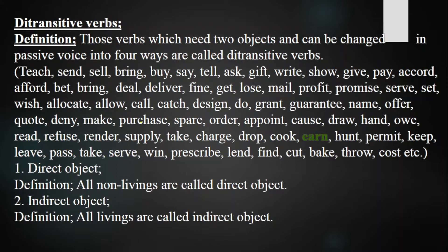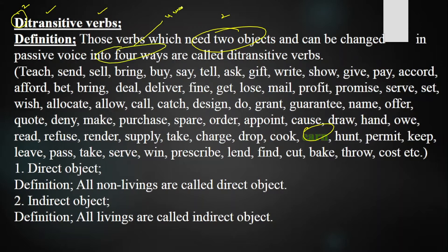Today we have the ditransitive verb 'earn' to change from active voice into passive voice. Before starting, let's look at the definition of ditransitive verbs. 'Di' means two transitive — verbs which show an action and need two objects. Those verbs which need two objects can be changed into passive voice in four ways.